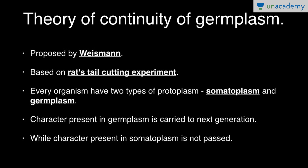Somatoplasm refers to somatic cells and germ plasm refers to germinal cells. Characters present in the germ plasm are carried to the next generation, while characters present in the somatoplasm are not passed on. Somatoplasm dies with the death of the organism. This theory contradicts Lamarck's theory. That's all for this lesson — thanks for watching.